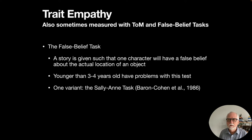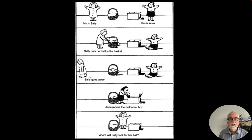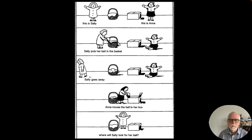In the Sally-Ann task, presented as a series of cards: Sally puts her ball in the basket; Ann moves the ball to her box while Sally is away; Sally comes back and the question is — where will Sally look for her ball? Very young children say the ball is in the box, but the correct answer is that Sally will look in the basket because she has a false belief. This tests whether a person — perhaps someone with brain damage or another disorder — can do perspective taking, a key element of empathy.